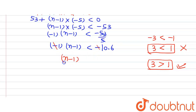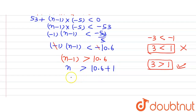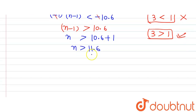Applying this rule here, since there is a minus, when we divide by minus 1 the inequality flips: N minus 1 is greater than 10.6. Moving the minus 1 to the other side gives N greater than 10.6 plus 1, which means N is greater than 11.6. The first integer greater than 11.6 is 12, so N equals 12. Therefore, the 12th term is the first negative term of the AP.